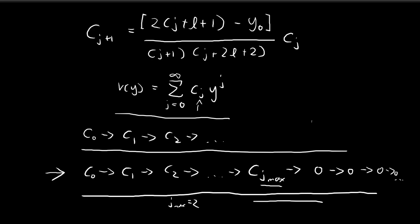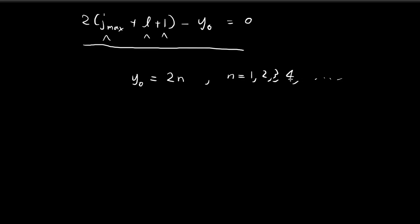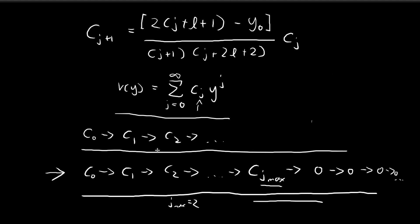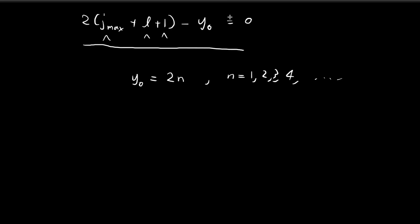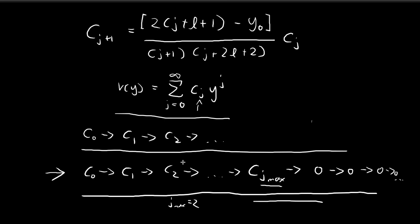For each choice of n, we get a different string of coefficients. If n is larger, the coefficients generate more terms before stopping; if n is smaller, fewer terms are generated. But for whatever choice, we get a different solution v(y) — and all those solutions are valid, normalizable, and satisfy the Schrödinger equation.